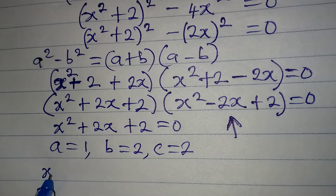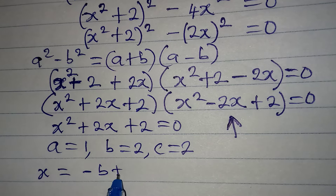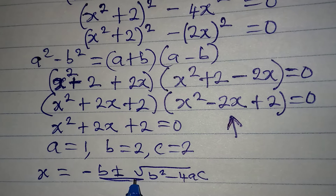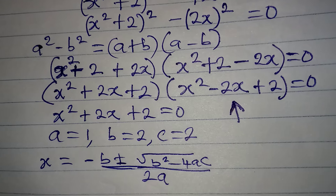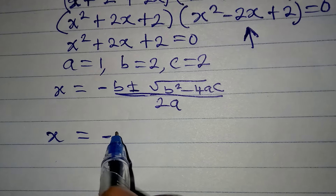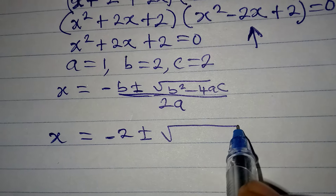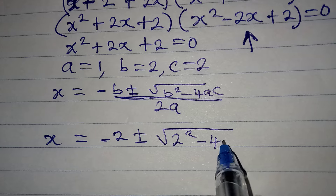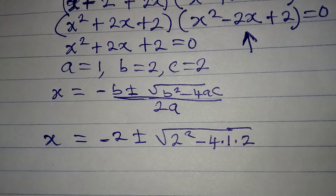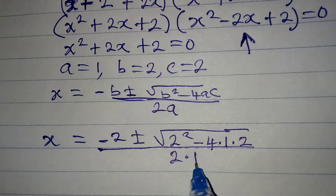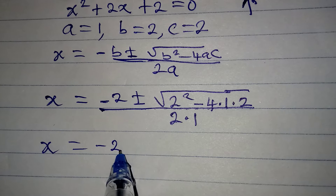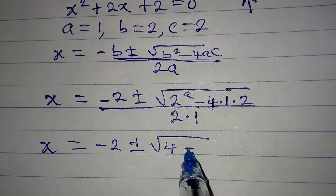The quadratic formula is x equals minus b, plus or minus the square root of b squared minus 4ac, all over 2a. We already have our a, b, c. So x will be: in place of minus b we have minus 2, plus or minus — b squared becomes 2 squared — minus 4 times 1 times 2, all over 2 times 1. So x equals minus 2 plus or minus the square root of 4 minus 8, over 2.